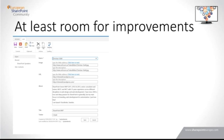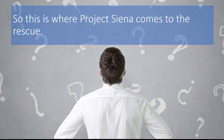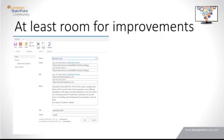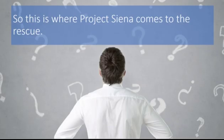Microsoft likes to use city names as codenames — Project Siena is still a codename, just like codename Oslo was for the Office Graph. Project Siena is, of course, a city in Italy, just as Oslo is a city in Norway. So instead of having this old, dull SharePoint list with a not-very-nice graphical interface, you will want to have something more — more nice to look at, more user-friendly and easier to use. That is exactly where Project Siena comes to the rescue.